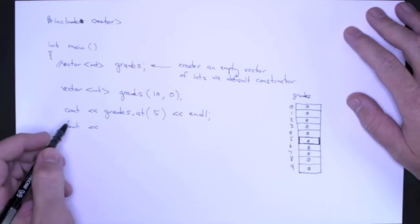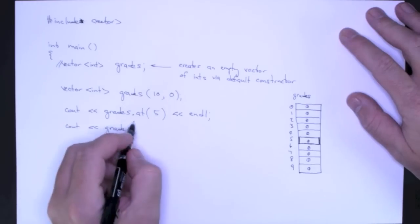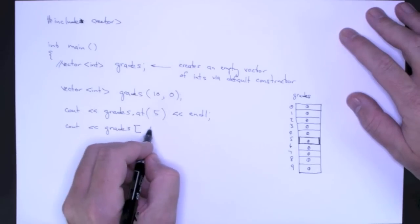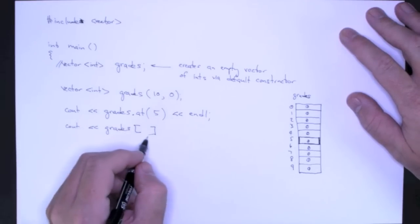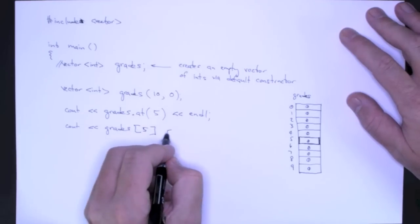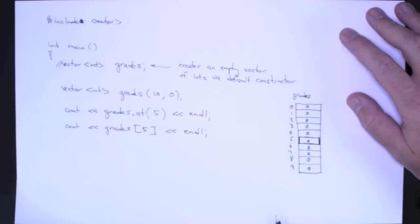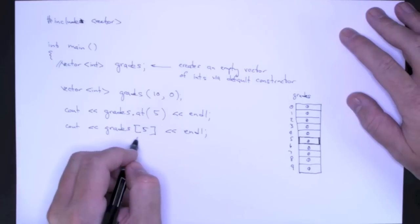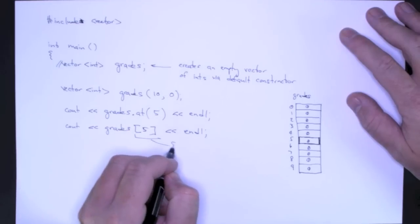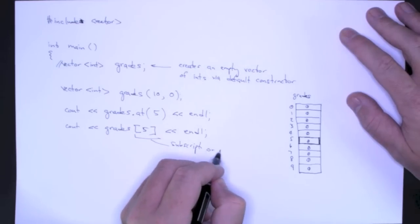There is an overloaded operator called the subscripting operator. And it looks like this, the square brackets. And you simply specify the location, and that will give you the value at that location. So this is the subscripting or index operator.